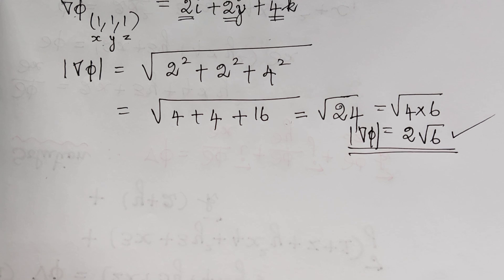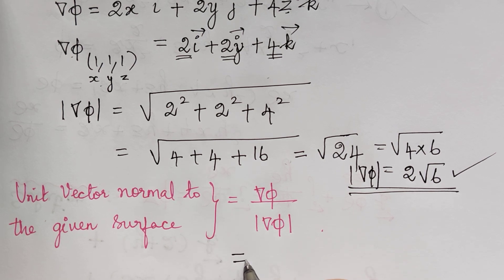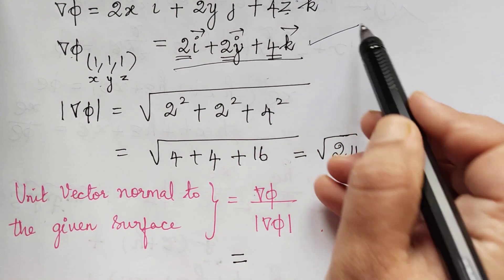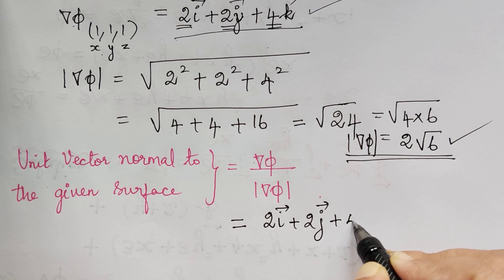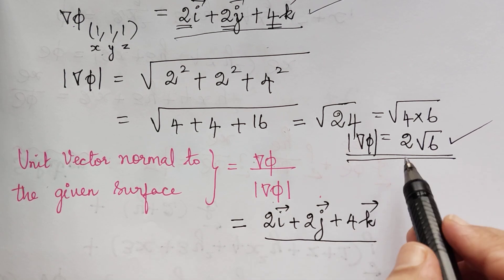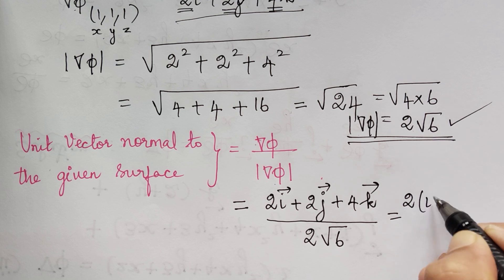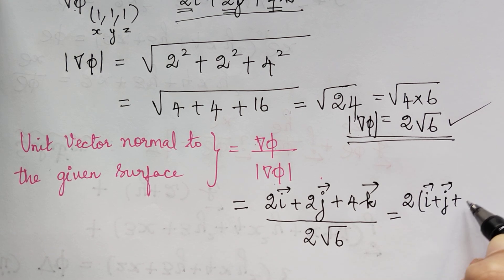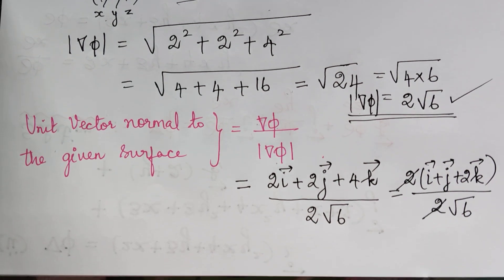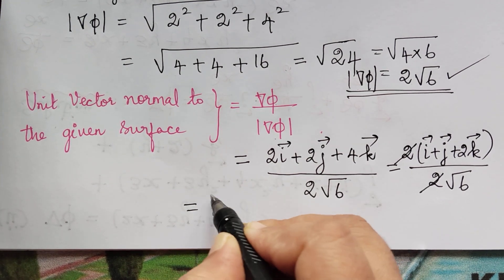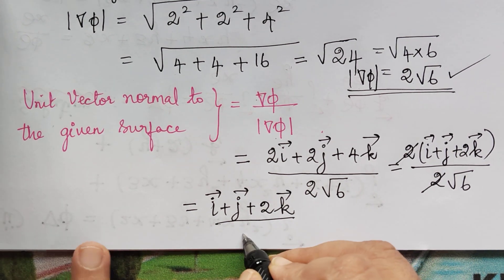The unit vector normal to the surface is ∇φ divided by |∇φ|, which is (2i + 2j + 4k) / (2√6). Taking 2 common in the numerator and cancelling with the 2 in the denominator, the final answer is (i + j + 2k) / √6.